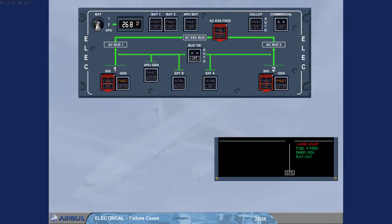All the procedures have been reviewed. As you clear the last one, memo messages appear on the engine warning display. The green EMERGEN memo message indicates that the emergency generator is running and supplying the system. The green RAT OUT appears when the RAT is not fully stowed.